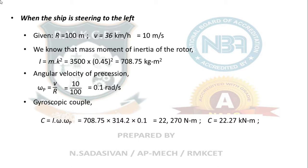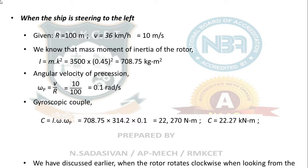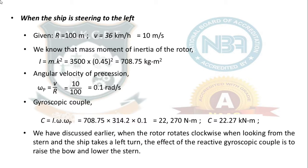Now for the conclusion: the propeller rotates clockwise when viewed from the stern and the ship takes a left turn. From the tabulation, when the rotor rotates clockwise looking from stern and the ship takes a left turn, the effect of the reactive gyroscopic couple is to raise the bow and lower the stern — pitching is the end result. This conclusion carries a separate mark in the answer and must be written.